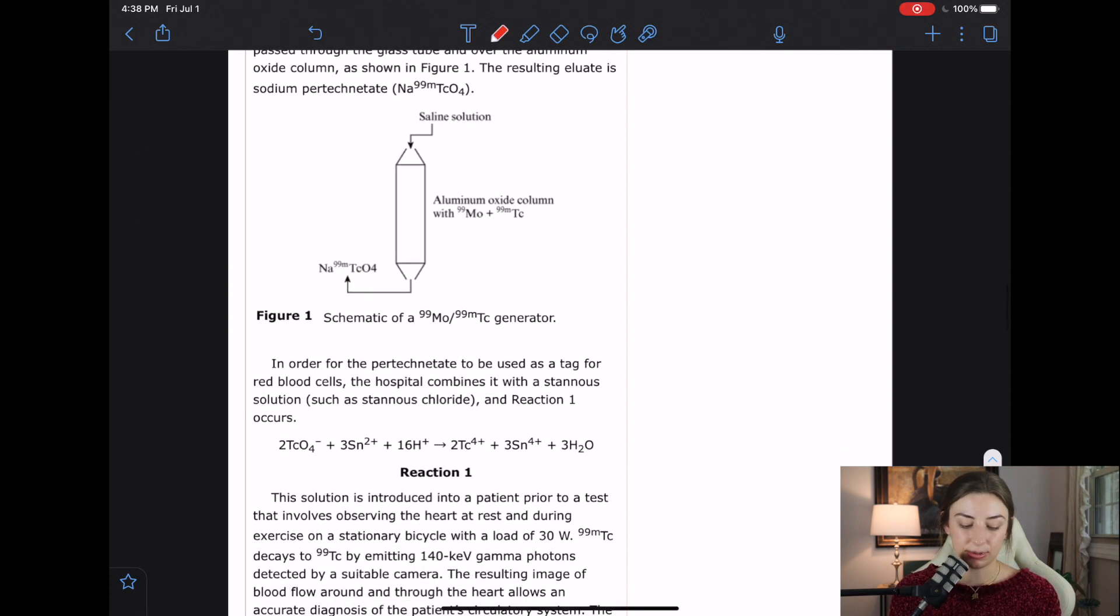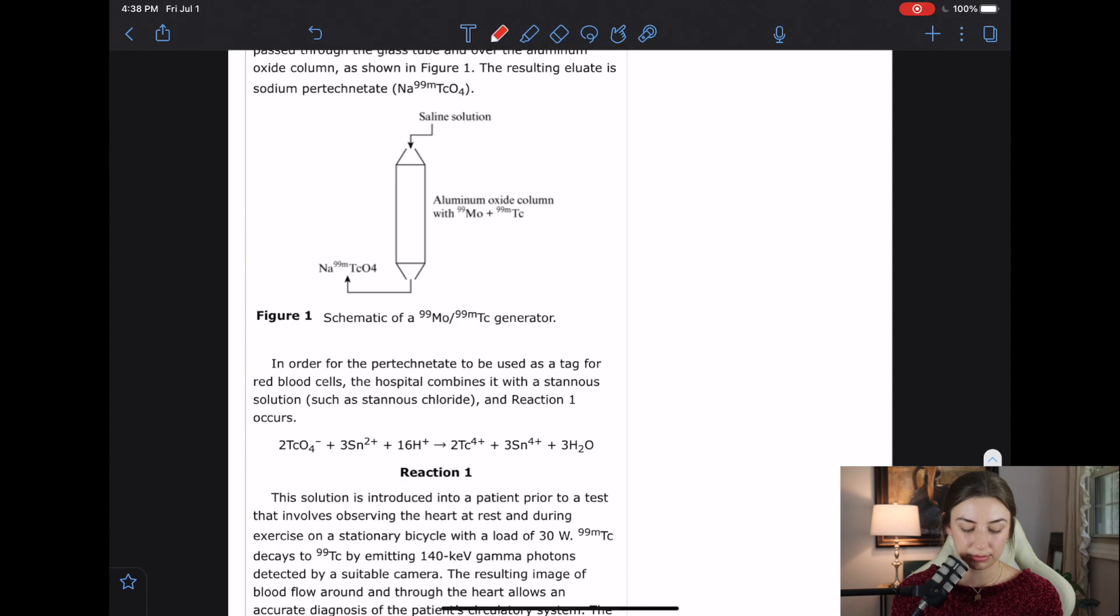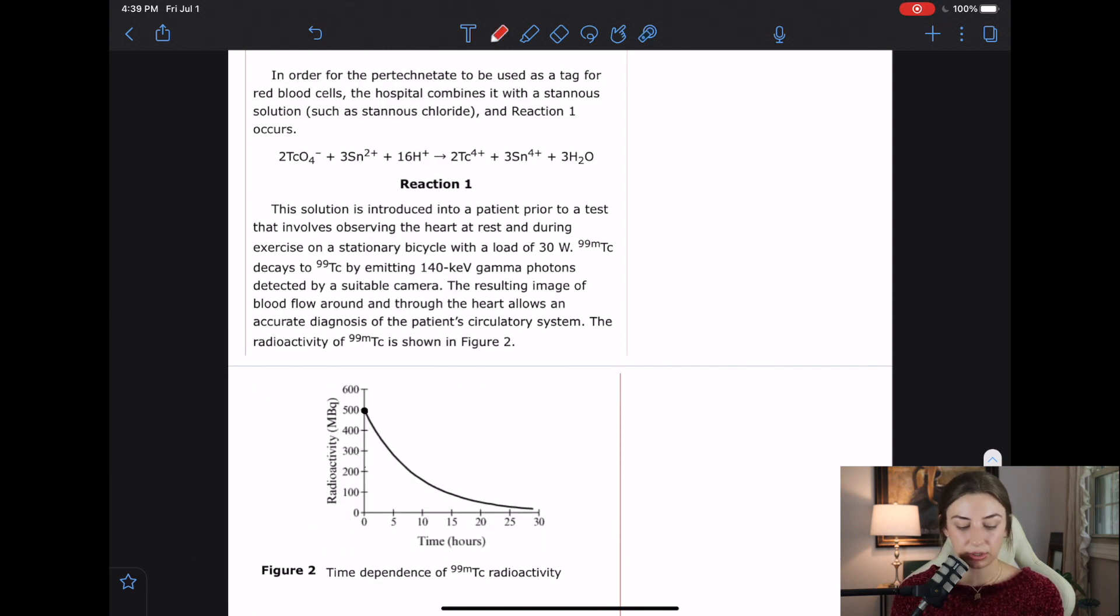In order for the pertechnetate to be used as a tag for red blood cells, the hospital combines it with a stannous solution such as stannous chloride and reaction one occurs. Personally, I'm not going to look at this reaction because it's not going to tell me anything right now. And if I need it, I can come back to it. This solution is introduced into a patient prior to a test that involves observing the heart at rest and during exercise on a stationary bike with a load of 30 watts. Always pay attention to units, especially ones that you are familiar with or that you know equations for.